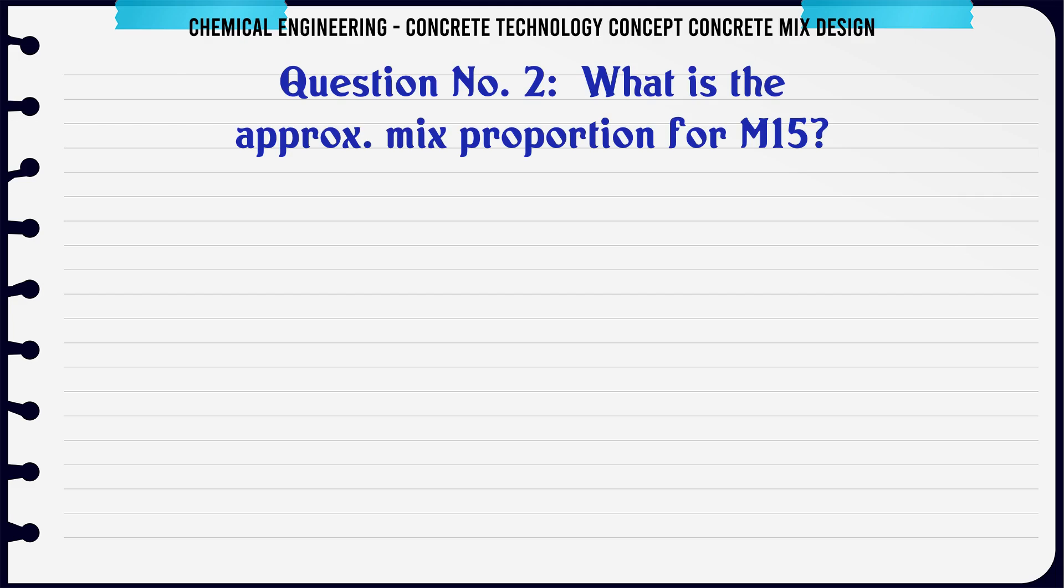What is the approximate mix proportion for M15? A: 1:3:6, B: 1:2:4, C: 1:1.5:3, D: 1:1:2. The correct answer is 1:2:4.